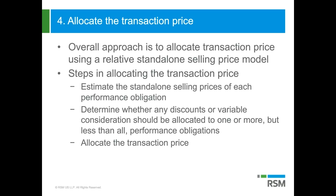So step one: you're going to estimate the standalone selling price of each performance obligation. Then in step two, you're going to determine if there are any discounts or any variable consideration that you don't want to allocate to all of the performance obligations. That is different from the existing model, where most likely you're going to allocate any discount on a pro rata basis across all the deliverables. The final step is to actually allocate the transaction price.